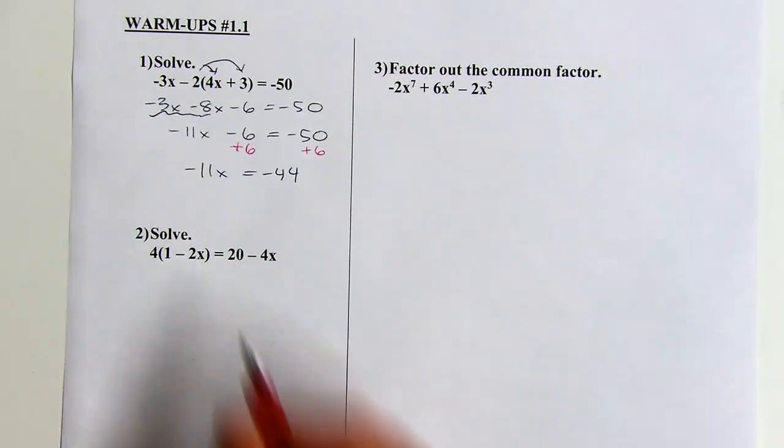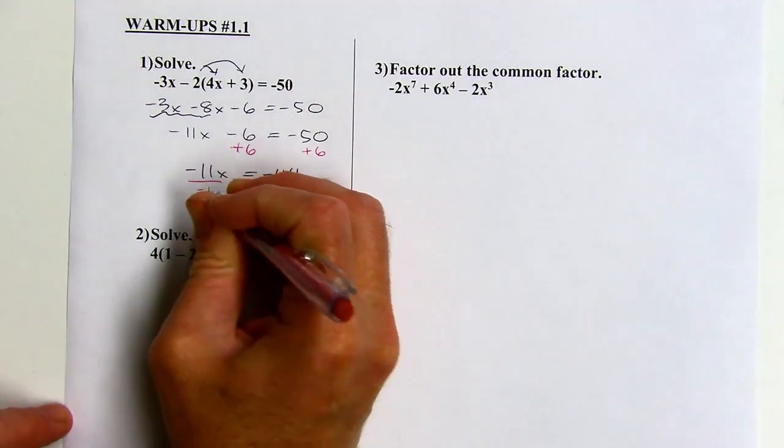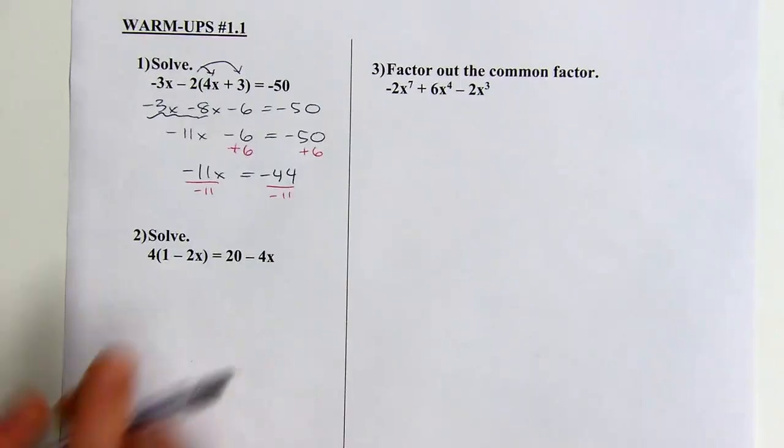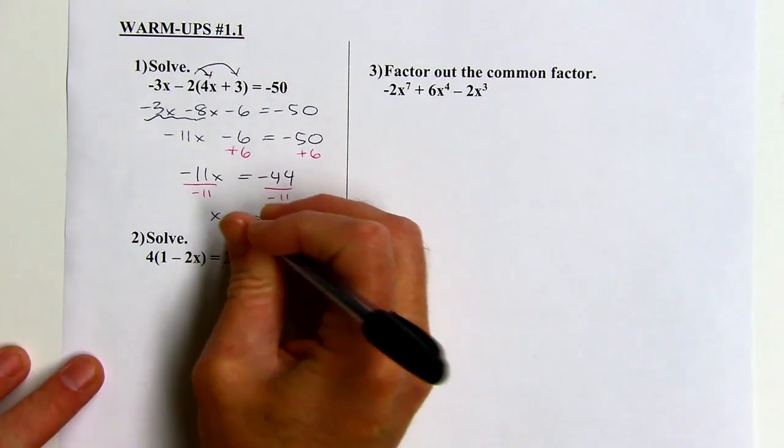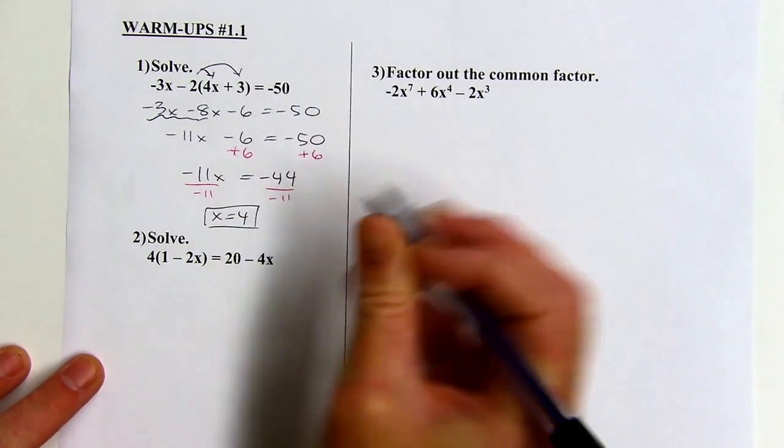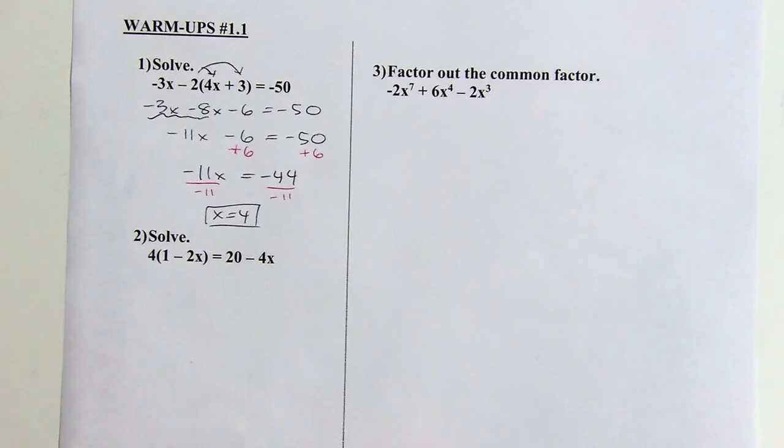And then the last thing is to divide by negative 11, and x will equal 4. And you could always test your answer out by plugging it into the original equation and seeing if it balances out.